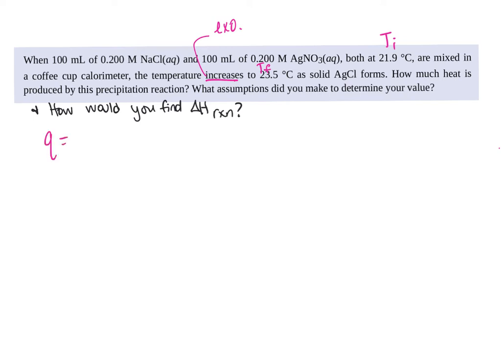How much heat is produced by this precipitation reaction? So technically, we're just going to use Q equals mc delta T in order to figure that out. So what assumptions did you make? And then I added on here, how would you find delta H? So let's talk about assumptions.